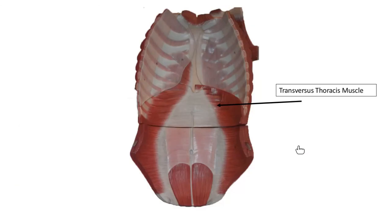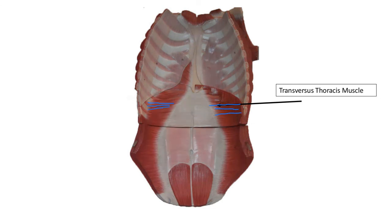Now we're doing an internal view — looking inside. We saw transversus abdominis earlier: if you don't see ribs, it's transversus abdominis; if you do see ribs, it's something else. Here, muscle fibers going transversely but with ribs involved — that's going to be the transversus thoracis.